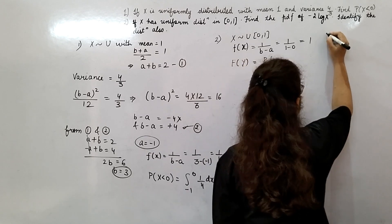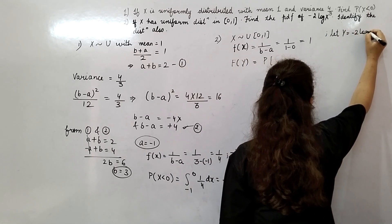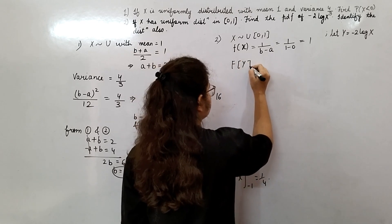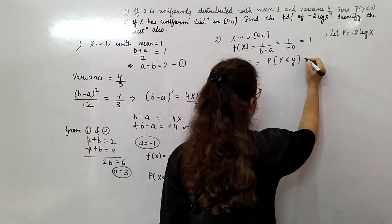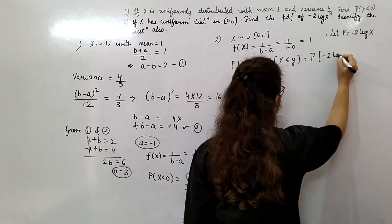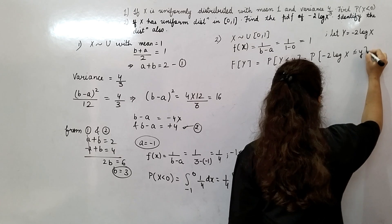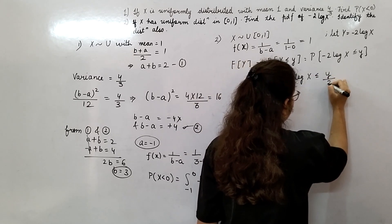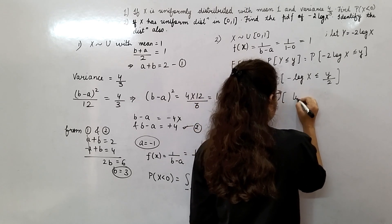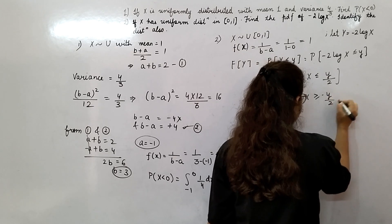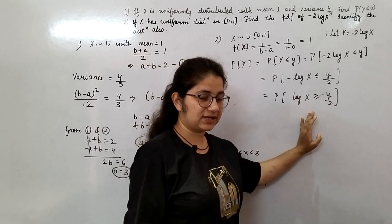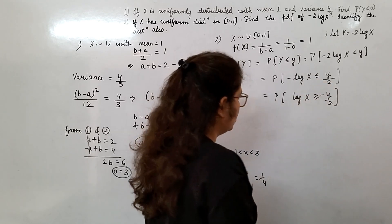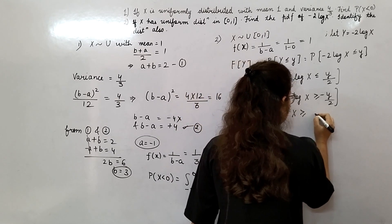Let Y = -2 log X. We find the CDF: F(y) = P(Y ≤ y) = P(-2 log X ≤ y). Shifting: P(-log X ≤ y/2). Multiplying by negative sign flips the inequality, so it becomes P(log X ≥ -y/2), which means X ≥ e^(-y/2).